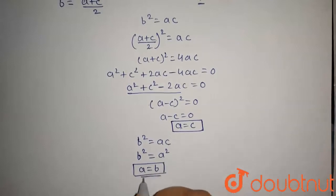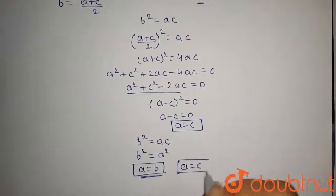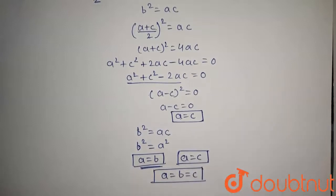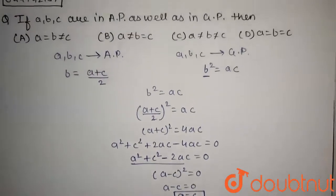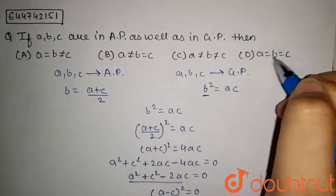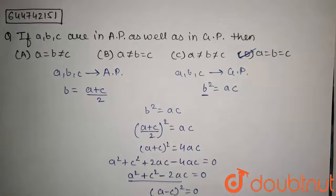Now we get A equals B and also we have A equals C. So we can write that A equals B equals C. The answer is: if A, B, C are in AP as well as in GP, then A equals B equals C, that is all three are equal. So option D is the correct option.